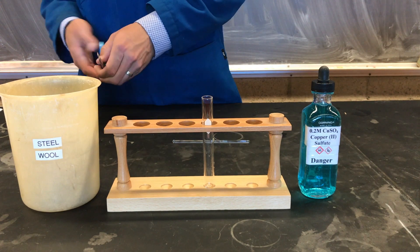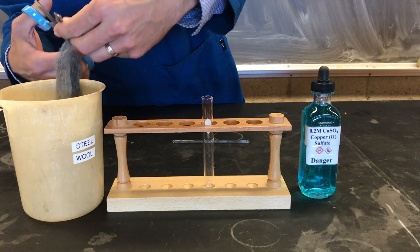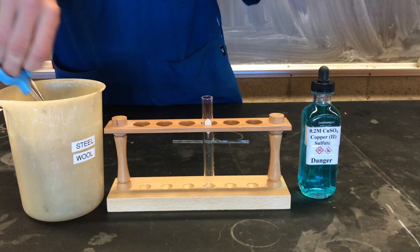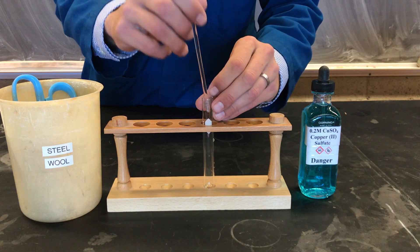In this reaction, we're again using steel wool as solid iron and reacting it with an aqueous solution of copper sulfate. We'll add a small amount of steel wool to a clean test tube.